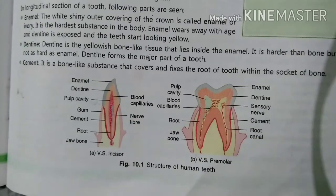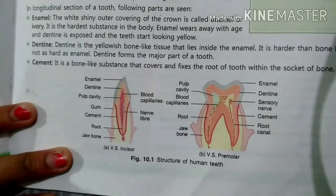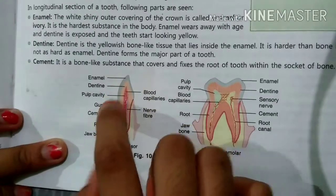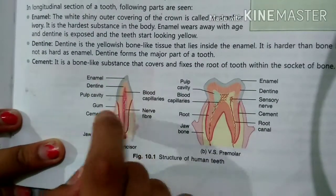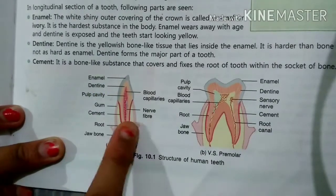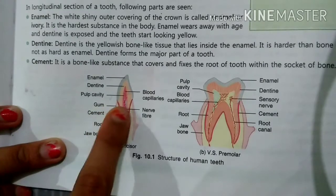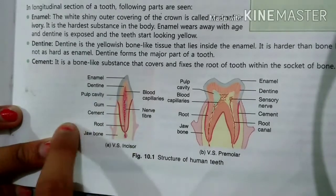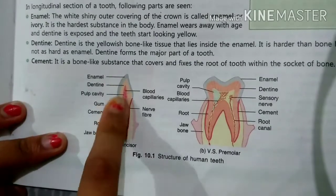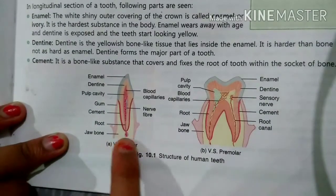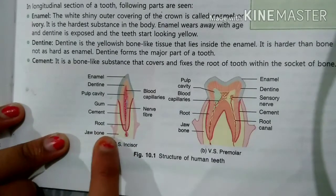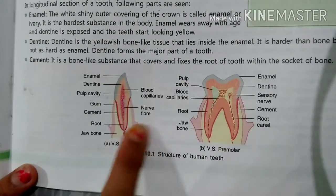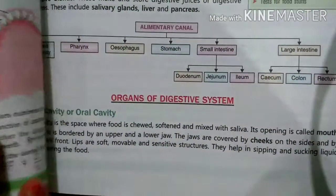A diagram has been given to help us. The outermost layer on the crown is enamel. Below that is dentine. The inner space is called the pulp cavity. The soft tissue around the neck is the gum. Below the gum is the root of the tooth, which sits in the jaw bone, also called the alveolar bone.